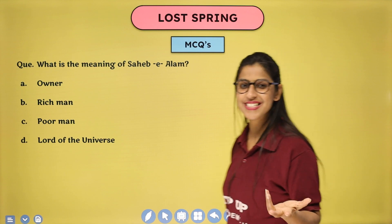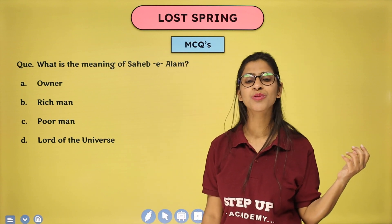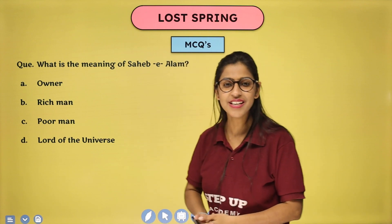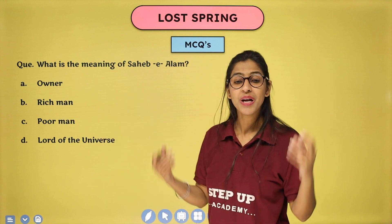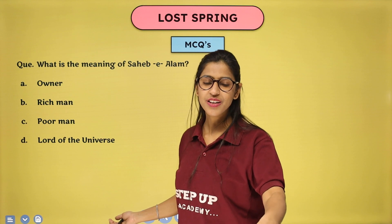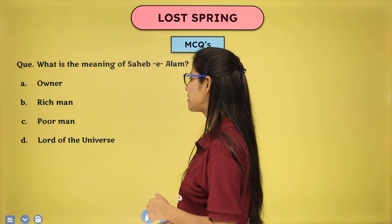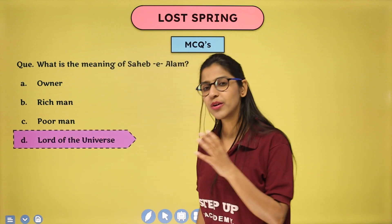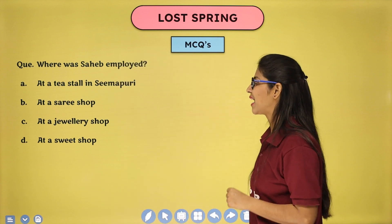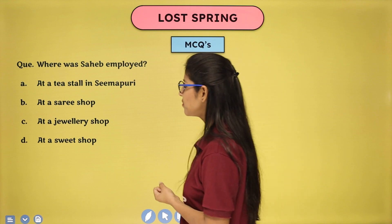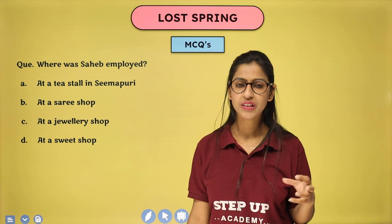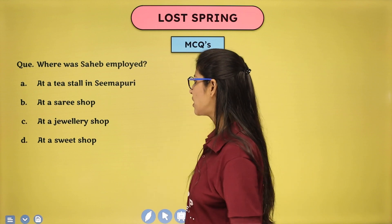What is the meaning of 'Sahib Alam'? As discussed earlier, when Anees Jung asked him his name and its meaning, Sahib Alam said he didn't know. She said: your name means 'God of the Universe,' 'Lord of the Universe,' 'Master of all.' But in reality, he is the contrast of his name — he is actually a ragpicker, a lord of the universe living in an exploited condition. Where was Sahib employed? He was employed at a tea stall in Seemapuri, carrying large tea canisters.